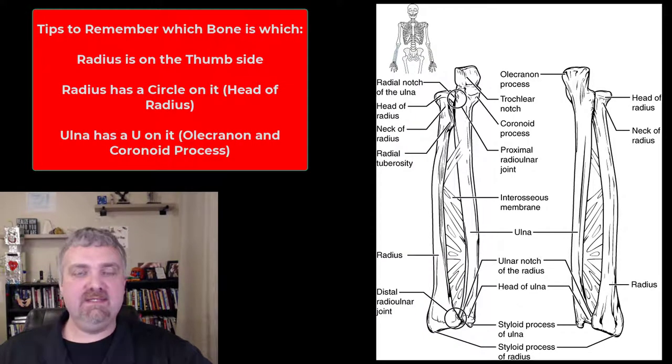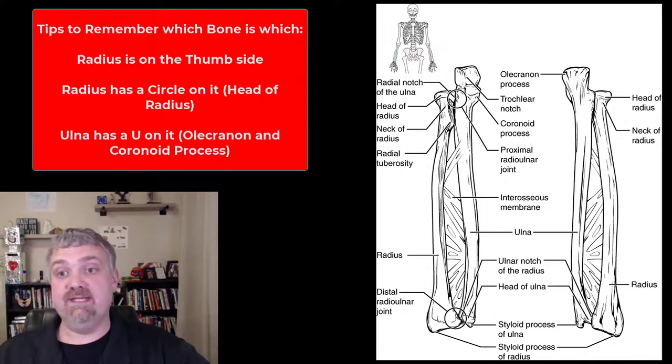Hey everybody, Dr. O here. Let's talk about the radius and ulna in your forearm. First thing I think of when I look at this picture is notice that the ulna starts big proximally and then tapers and gets smaller, whereas the radius is going to start small proximally and then gets larger as it travels down to the wrist.